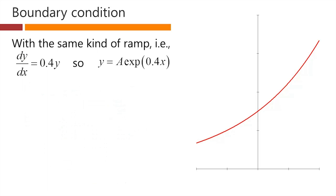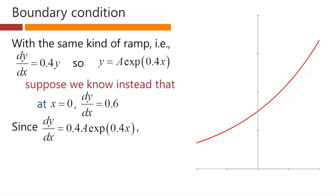Suppose instead that with the same kind of ramp, that is, dy/dx equals 0.4y, we have our same general solution here with still an undetermined constant in it, A. Suppose that we know instead that at x equals 0, the slope of the ramp is 0.6. So we know the slope here of the ramp at x equals 0.